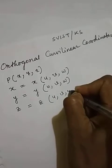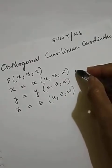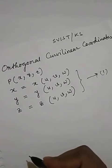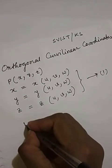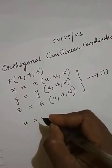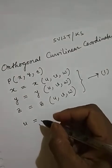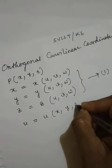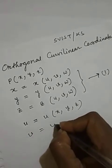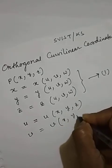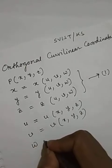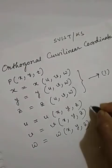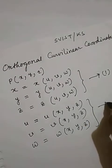Let us take that as Set 1. Now u, v, w can also be expressed as a function of x, y, z. Let us take that as Set 2.